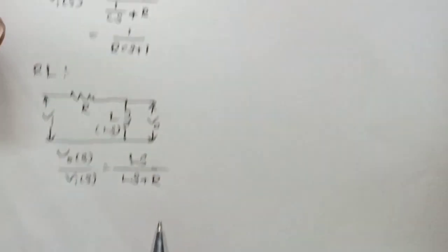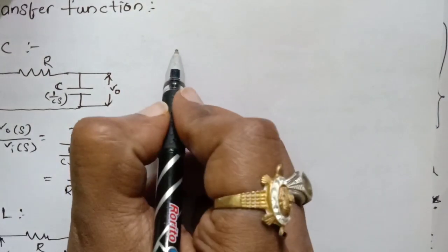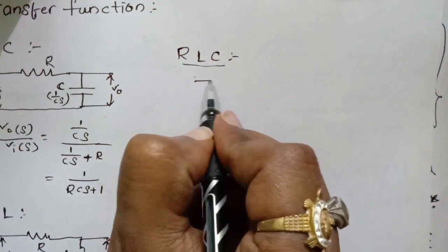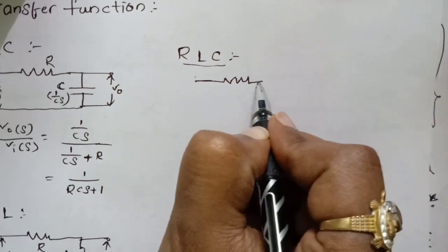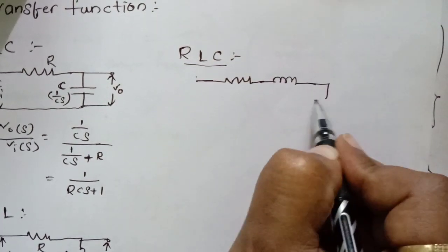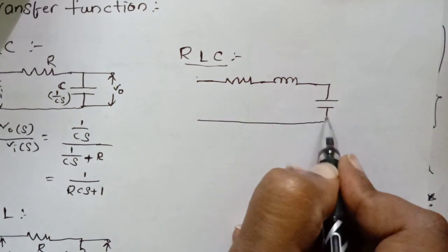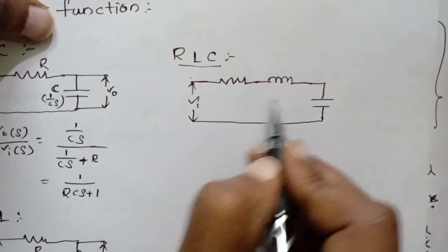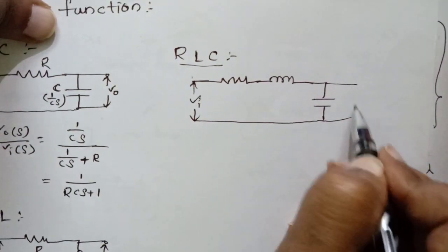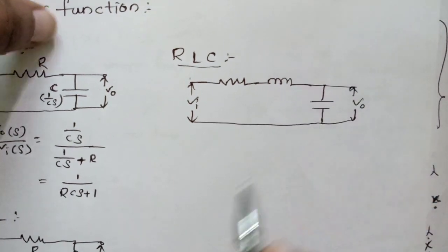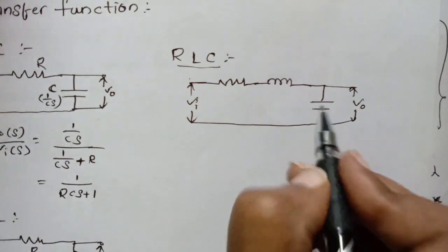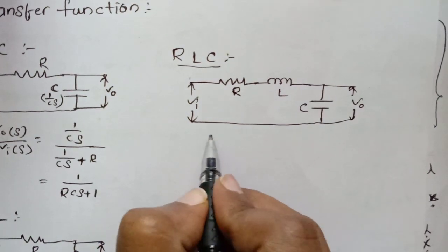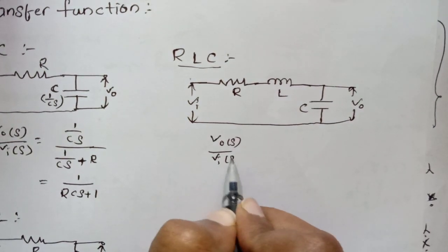Now I'm writing the transfer function for the RLC network. This is the same approach — R, L, and C here. This is the RLC circuit and I'm having the input as Va, taking the output across the capacitor. So I'll be writing V-naught here. This is C, this is L, this is R. V-naught(s) by Vi(s)...